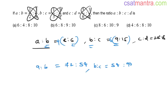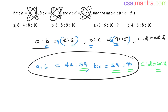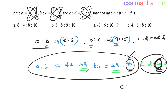Now b is equal in both ratios. For c:d = 20:18, we need to make c equal to 90. We already have 90 for c here, so multiply 20:18 by 90/20. We don't want 20; we want 90, so divide by 20 and multiply by 90.